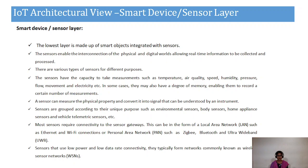Different types of sensors are used for different purposes — for example, temperature sensors, speed sensors, humidity, pressure, electricity, and movement sensors. They also have a degree of memory, enabling them to record a certain number of measurements. Sensors measure a physical property and convert it into a signal that can be understood by an instrument. Sensors are grouped by unique purposes: environmental sensors, body sensors, home appliance sensors, vehicle telemetric sensors, etc.